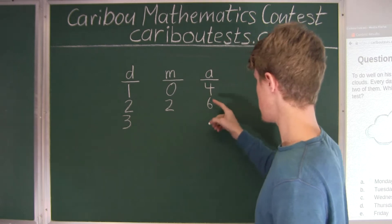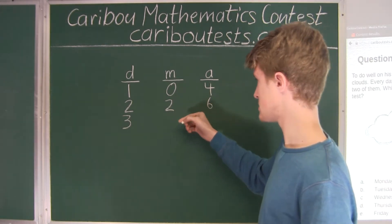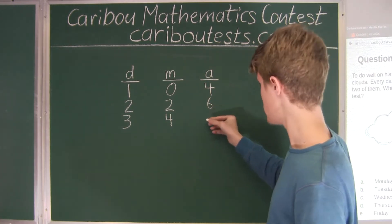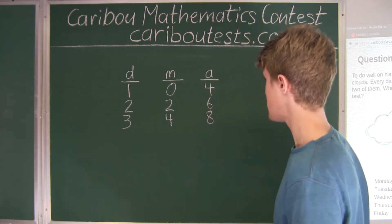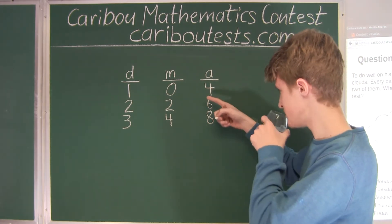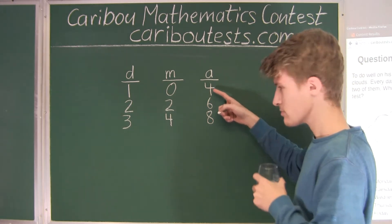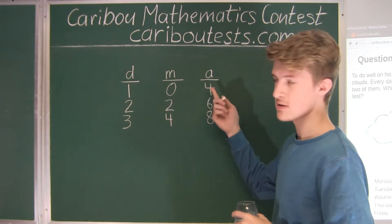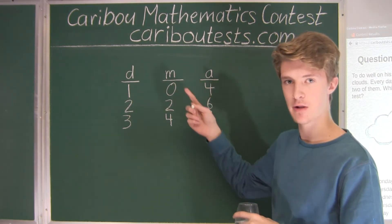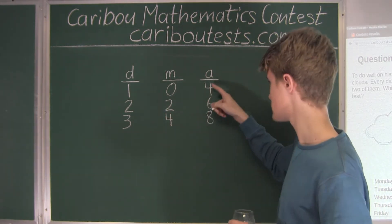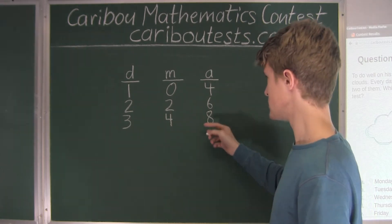Then for day 3, we have 6 minus 2 is 4 before he learns anything, and then after he learns in the afternoon, he then knows 8. Now we can see a pattern here. For the afternoon, it's always going up by 2 for each day. That makes sense because we have plus 4 and then minus 2. So plus 4 minus 2 is also plus 2, so it's always going up by 2.